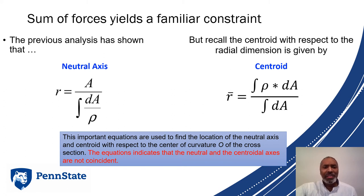Our previous analysis has shown that the neutral axis is given by r equals A over the integral of dA over rho, but recall the centroid with respect to the radial dimension is given by the integral of rho dA over dA. You can see clearly that these two things are different, so the neutral axis and the centroid may not always line up.